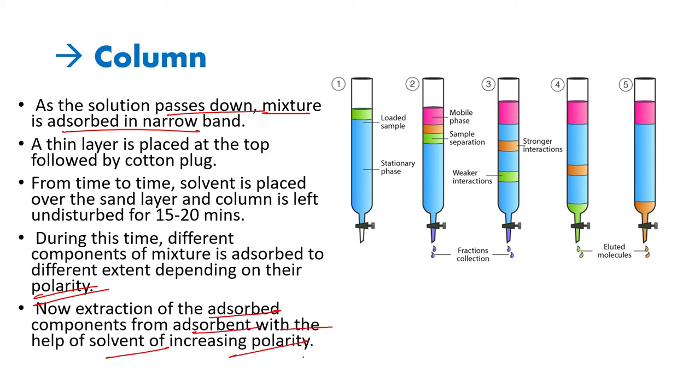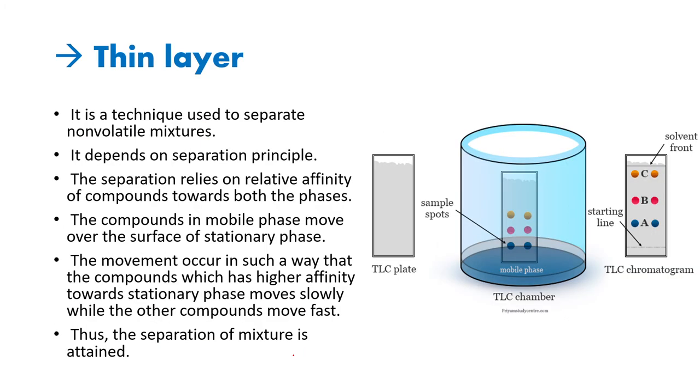Thin layer is an affinity-based method to separate compounds. Affinity-based method means how much attraction is there with the adsorbent. As the name suggests, we have a thin layer of adsorbent. It is a technique used to separate non-volatile mixtures. The separation relies on relative affinity or attraction with the compound and the phases. The compounds in the mobile phase move over the surface of a stationary phase.